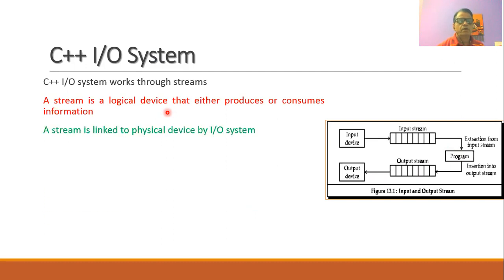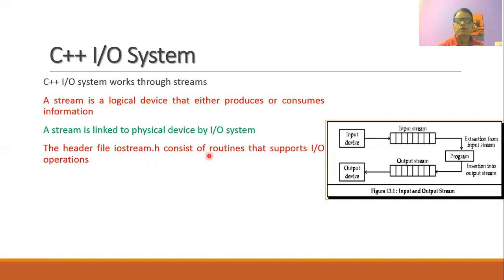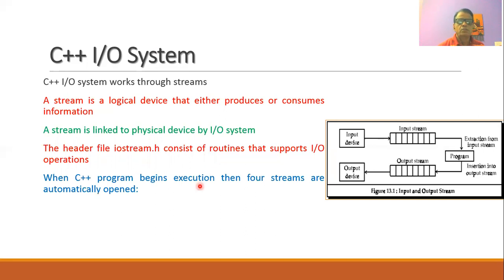A stream is always connected to a physical device. For example, the input stream is connected to an input device such as the keyboard, and the output stream is connected to the output device such as the monitor screen. Whenever we write any program in C++, we always need to include the header file iostream.h, because it consists of routines that support the input and output operations in C++.